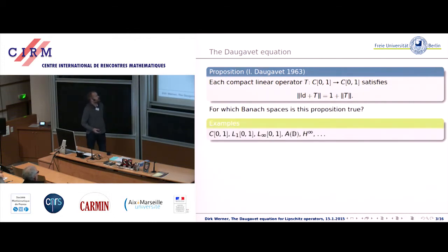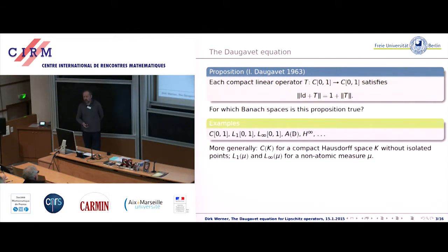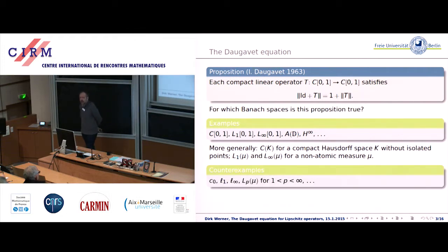Here are some answers from what might have been called the Bronze Age of this theory. First of all, the interval [0,1] can be replaced by any compact Hausdorff space that doesn't have isolated points. Likewise, instead of the Lebesgue measure, any non-atomic measure will do.